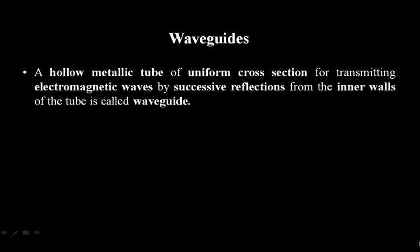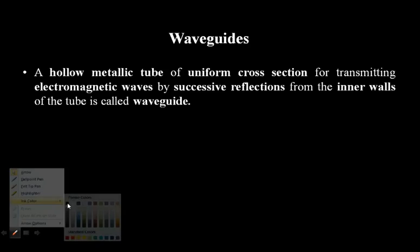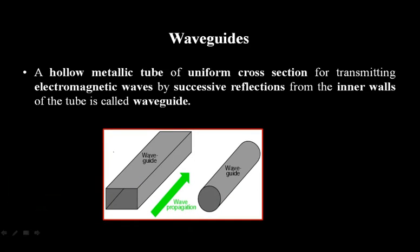With the introduction of waveguides, if I want to define what a waveguide is — waveguides are nothing but a hollow metallic tube of uniform cross-section for transmitting electromagnetic waves by successive reflection from the inner wall. It is a tube-like structure that we call a waveguide. If you go through the structure of a waveguide you will see this kind of structure — it has a rectangular kind of shape.